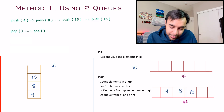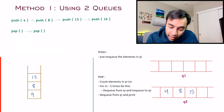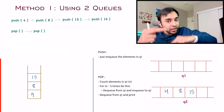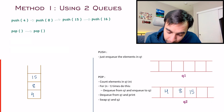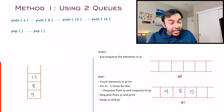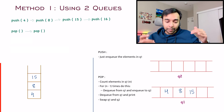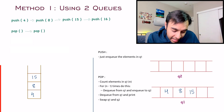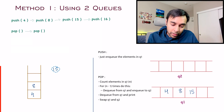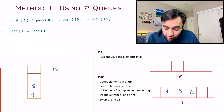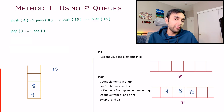Now 16 has popped out. Since we've completed this operation, we're going to swap Q1 and Q2, so Q1 becomes Q2 and Q2 becomes Q1. Our scenario is now almost the same again. Let's say I have one more pop operation. In the stack, 15 will get popped out. But in the queue, if you simply do a pop, 4 will come out — and that's not what we want.